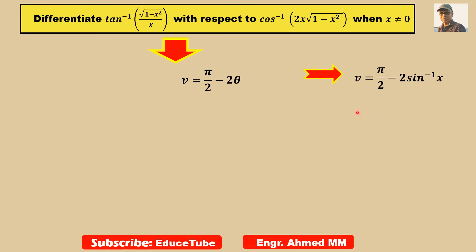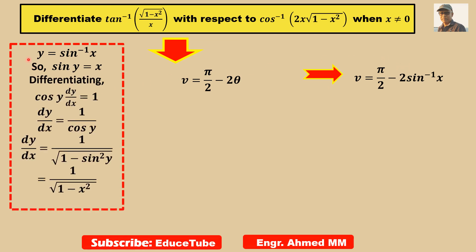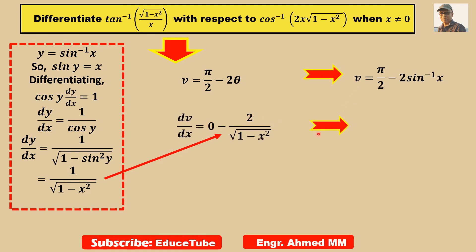Now we need to find dv by dx. Like before, using y equal to sin inverse x, sin y equal to x, differentiating we get dy by dx equal to 1 by square root of 1 minus x squared. So dv by dx equals 0 minus 2 times the derivative of sin inverse x, which gives dv by dx equal to minus 2 by square root of 1 minus x squared.